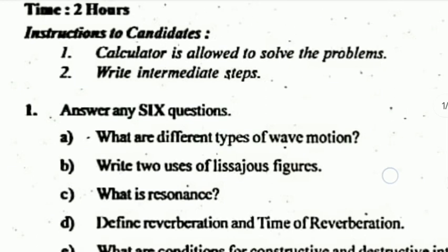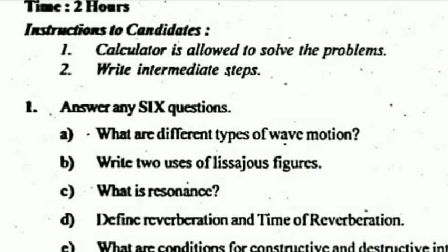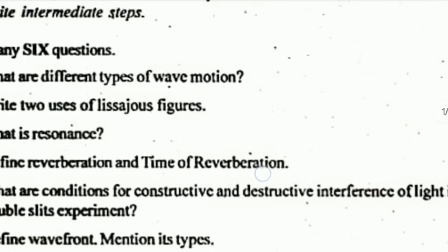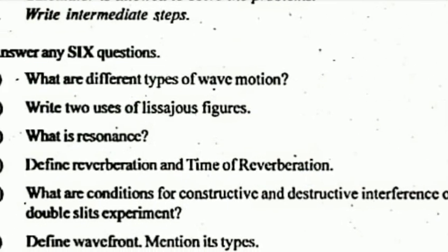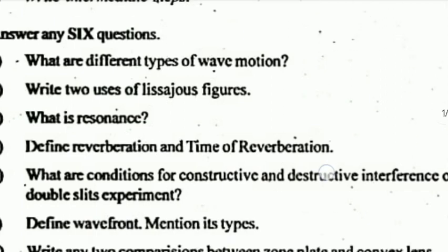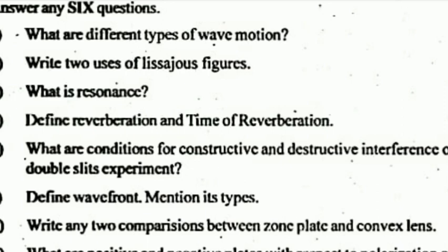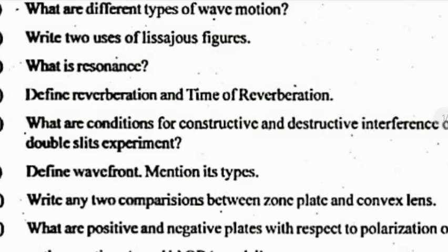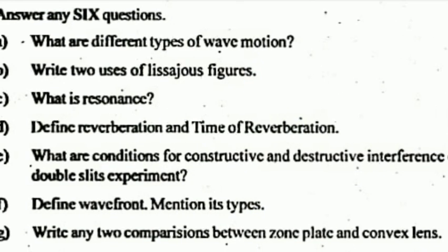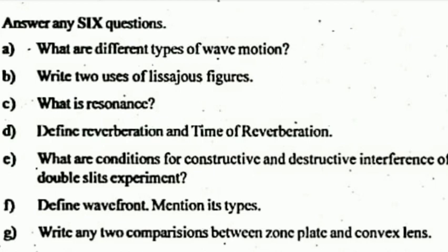D) Define reverberation and time of reverberation. E) What are the conditions for constructive and destructive interference of light in Young's double slit experiment? F) Define wavefront and mention its types. G) Write any two comparisons between zone plate and convex lens. H) What are positive and negative plates with respect to polarization of light? These are the two-mark questions.